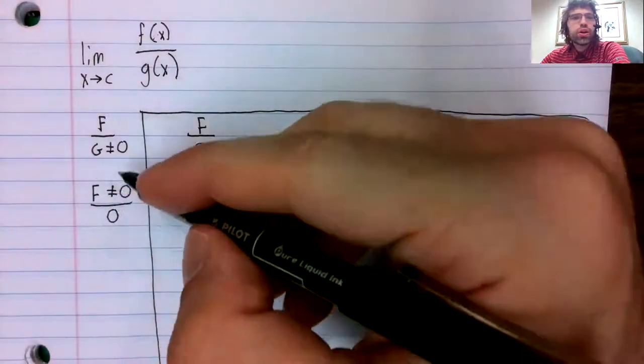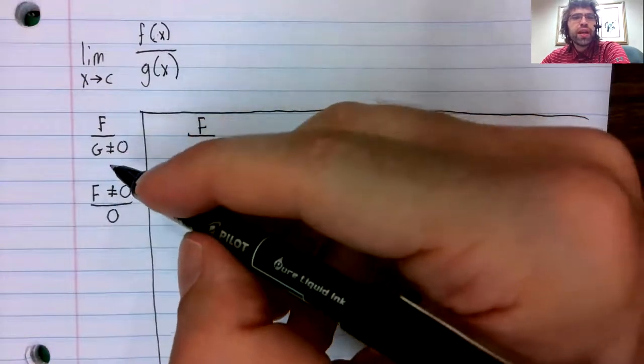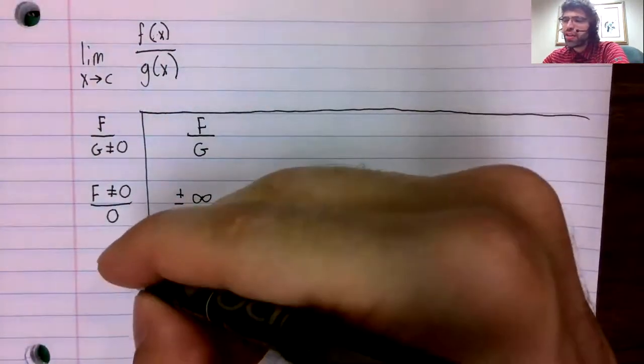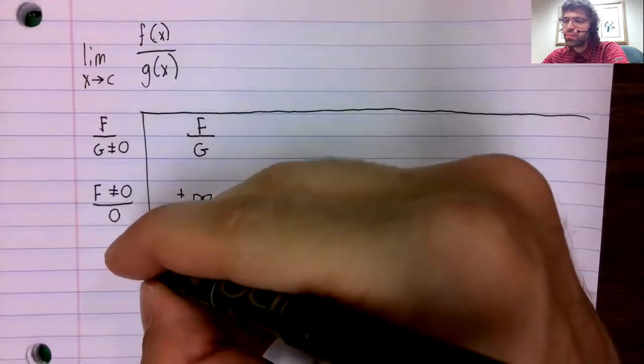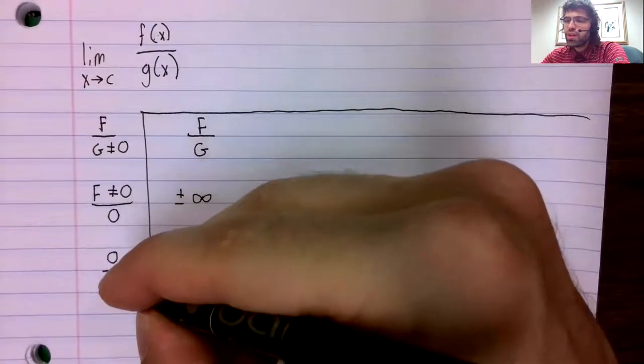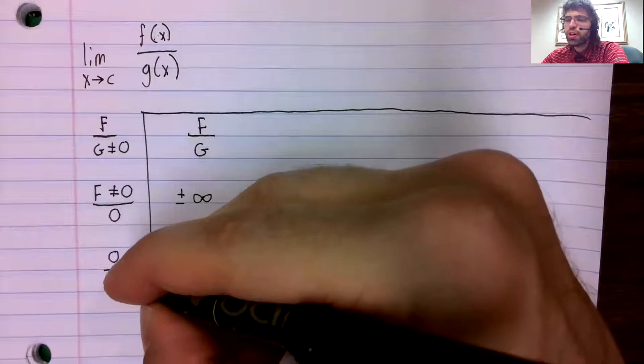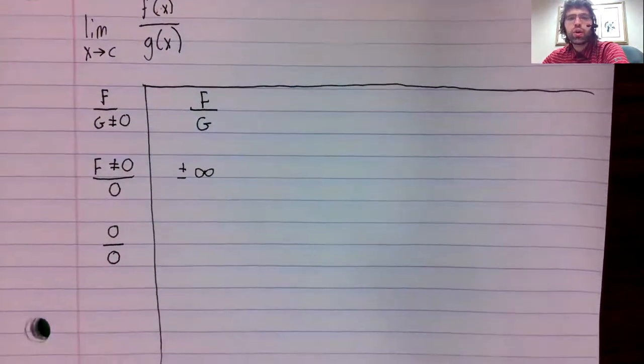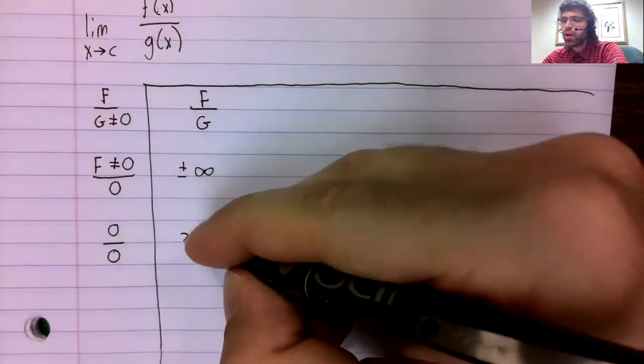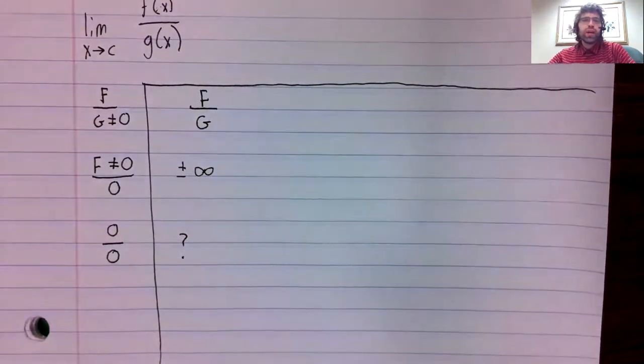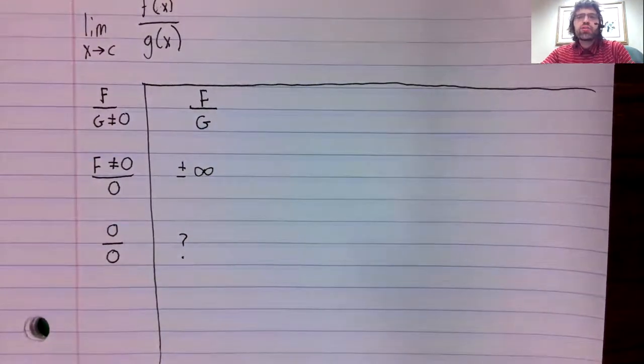The only remaining case where everything here is finite would be the case where the numerator and the denominator both approach zero. And that is what is called indeterminate.